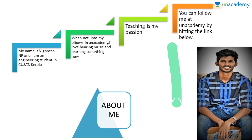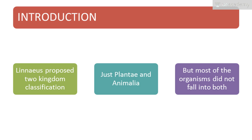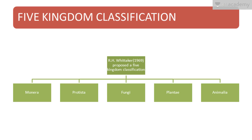It was Carolus Linnaeus who proposed the two-kingdom classification, which included only plants and animals — Plantae and Animalia. But most organisms did not fall into either category, so it was discarded. Then came the five-kingdom classification proposed by R.H. Whittaker in 1969, which includes Monera, Protista, Fungi, Plantae, and Animalia. Let us learn about each of these kingdoms.